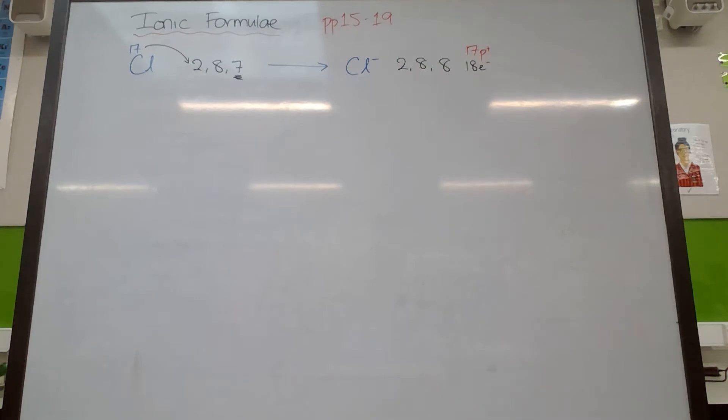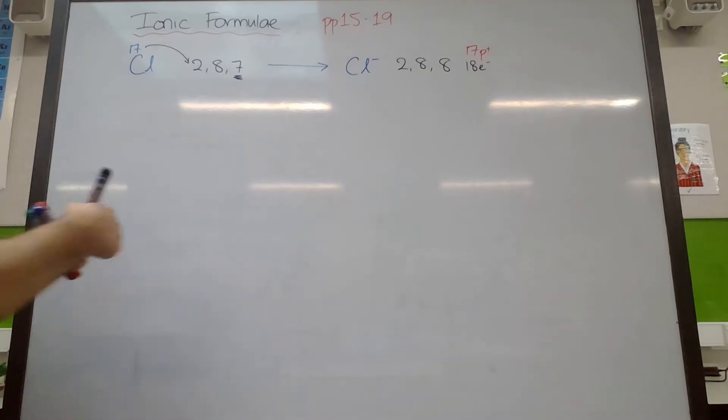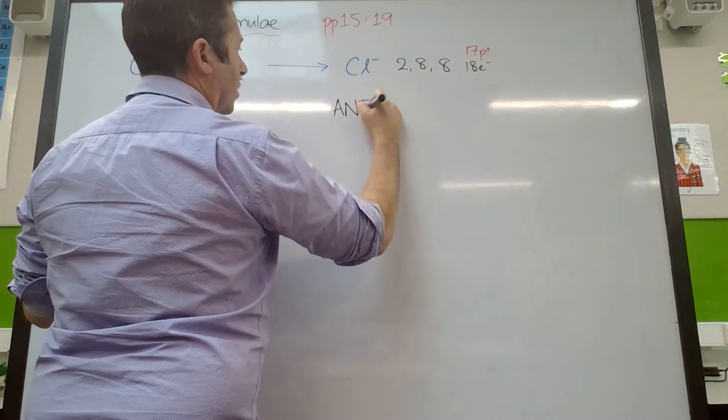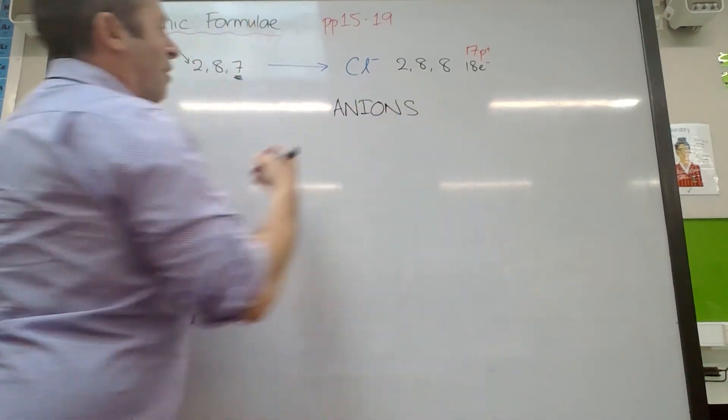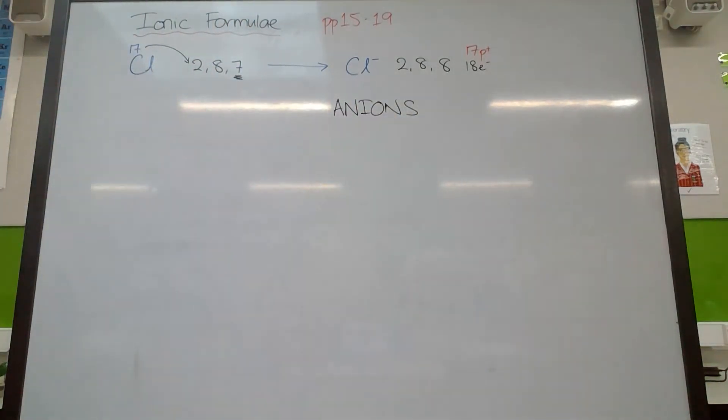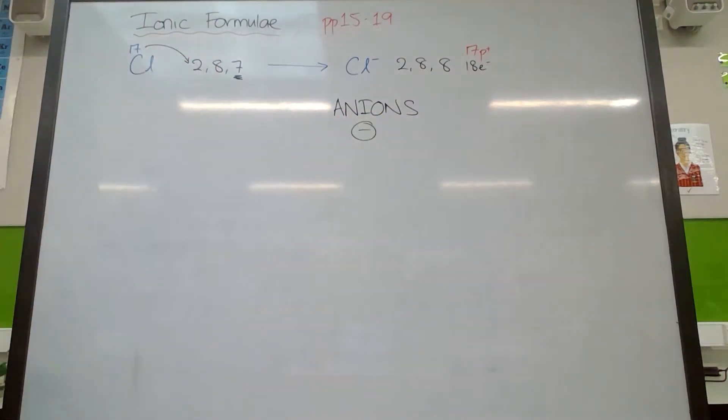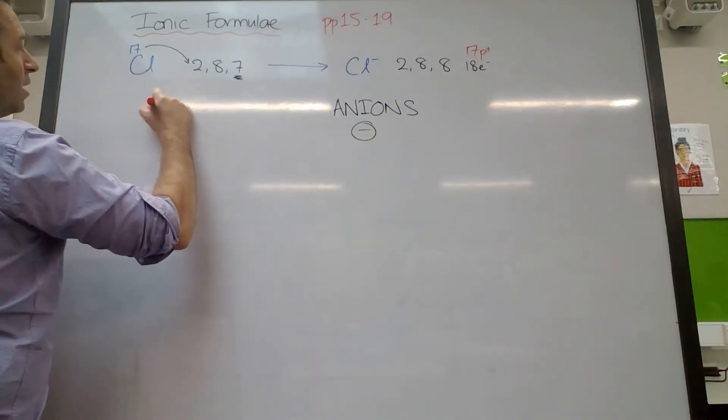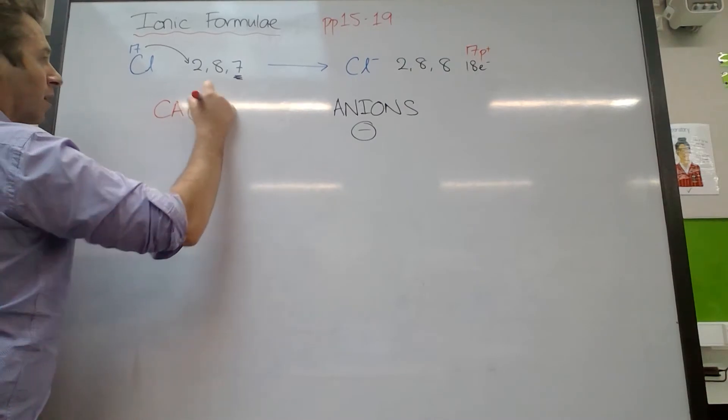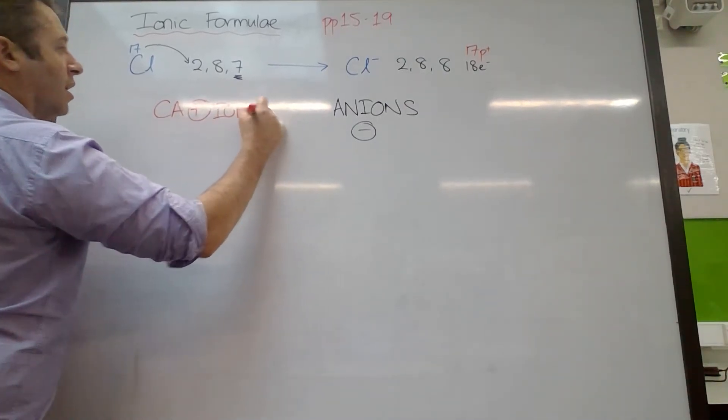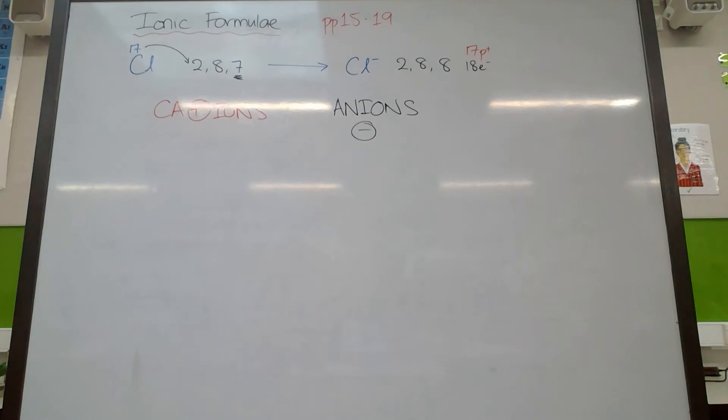So the periodic table allows us to know what ions things can form. If things form ions, they then have to find an oppositely charged ion. So negative ions, which we call anions, are attracted to positively charged cations because of their opposite charges.